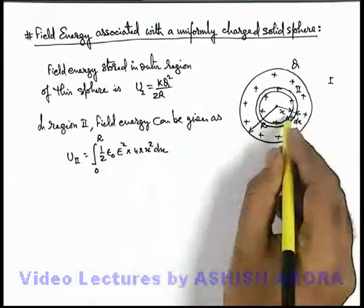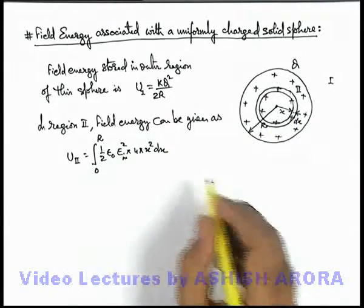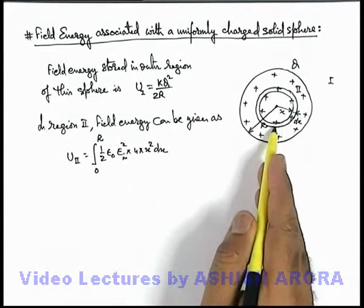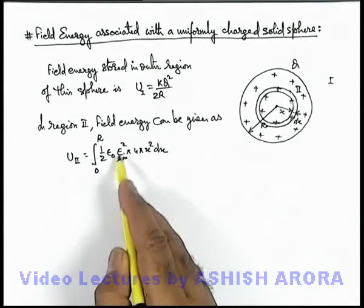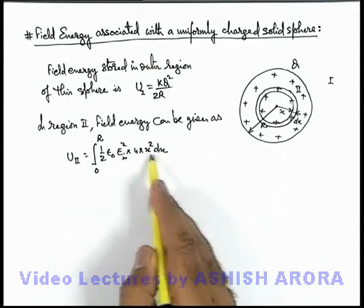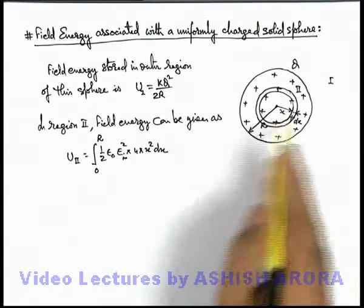And within this if electric field is taken as E inside, then the field energy density can be written as ½ε₀E² multiplied by the volume of shell, integrated from zero to R.